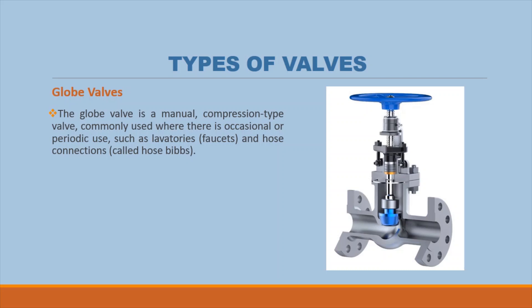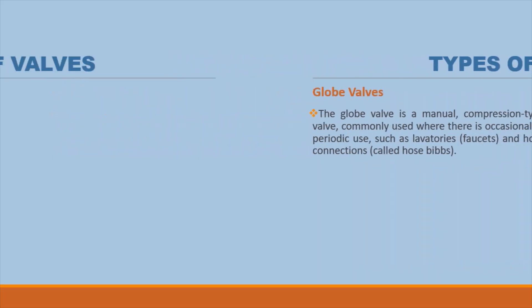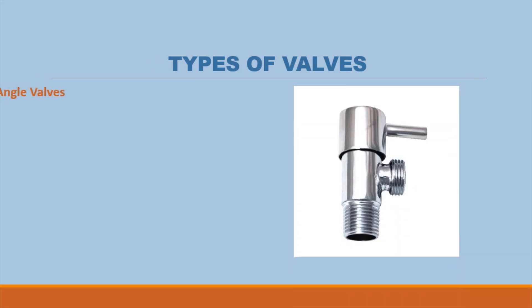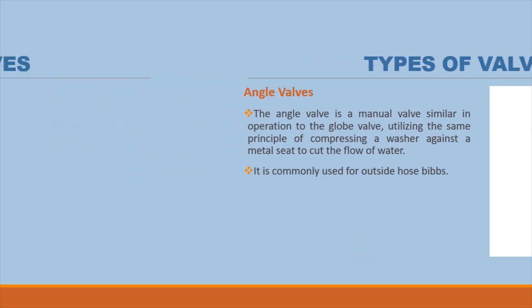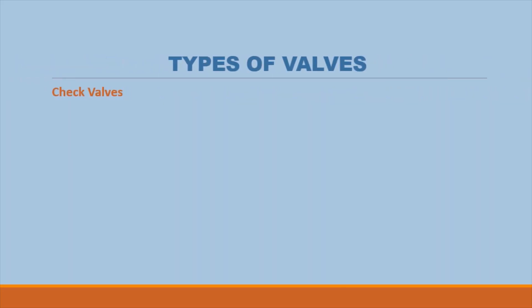Globe valves: the globe valve is a manual compression-type valve commonly used where there is occasional or periodic use, such as lavatories and hose connections. This type of valve regulates the flow of water. Angle valves: the angle valve is a manual valve similar in operation to the globe valve, utilizing the same principle of compressing a washer against a metal seat to cut the flow of water. It is commonly used for outside hose bibs.